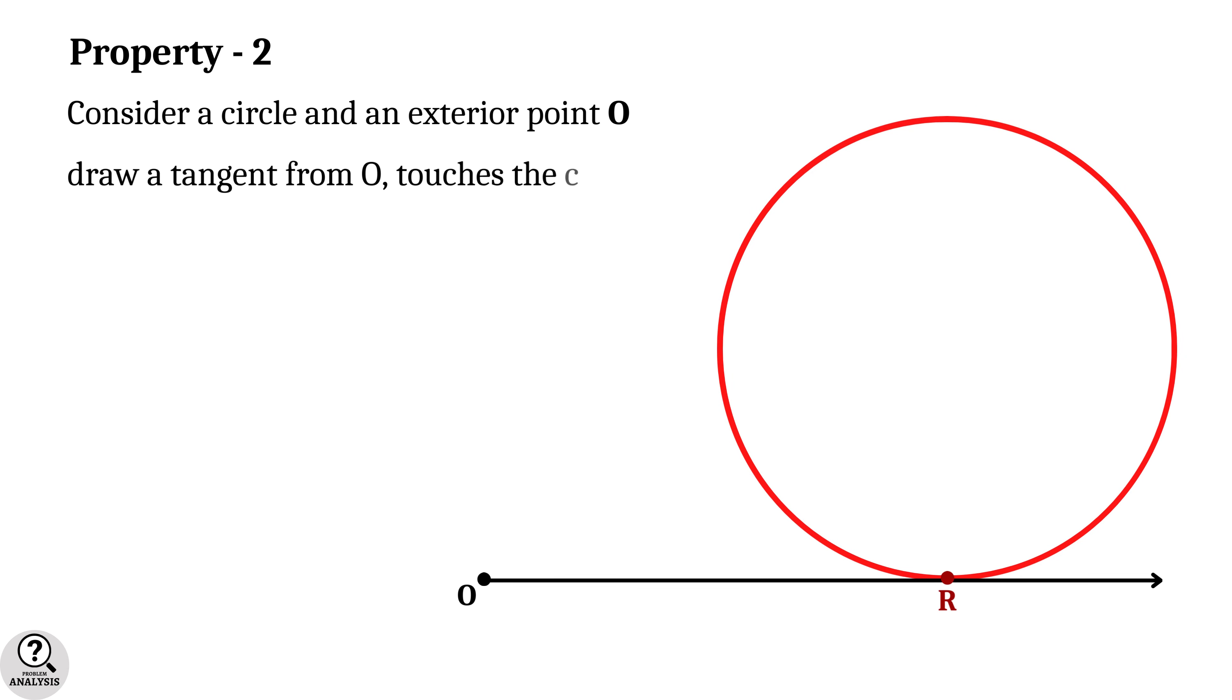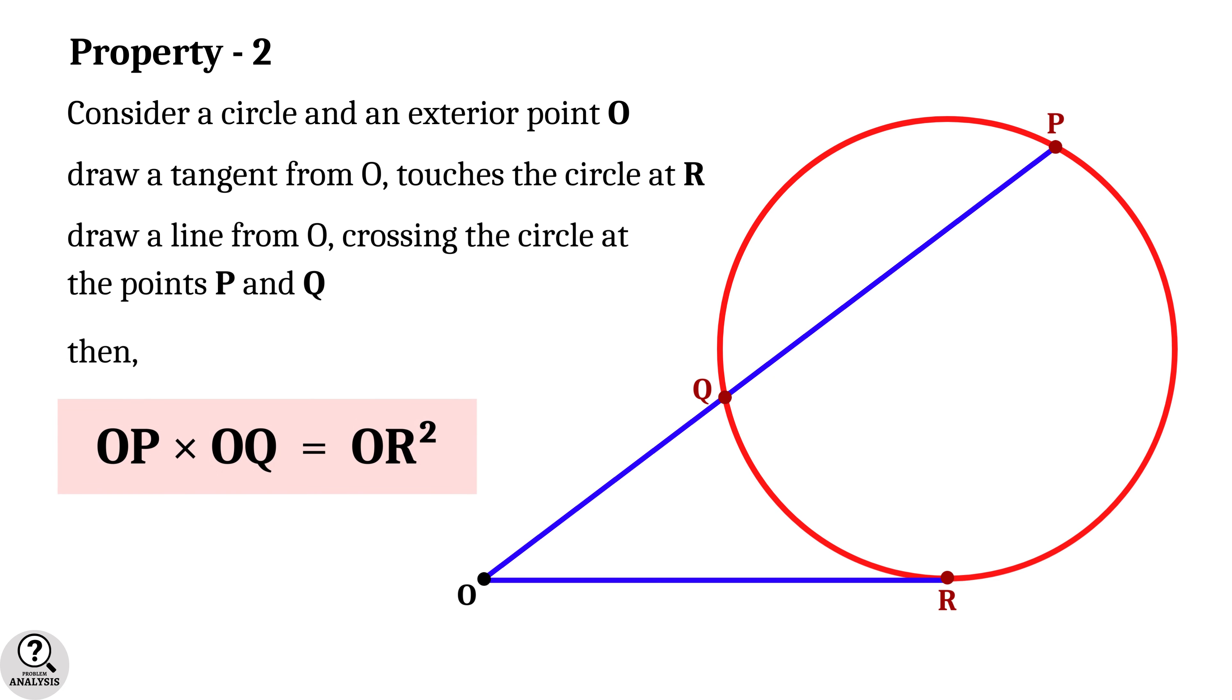Now property 2. Consider a circle at an exterior point O. Now draw a tangent from O that touches the circle at the points P and Q. Then the fact is OP into OQ equal to OR square. That is, the product of the lengths OP and OQ is equal to the square of the tangent OR.